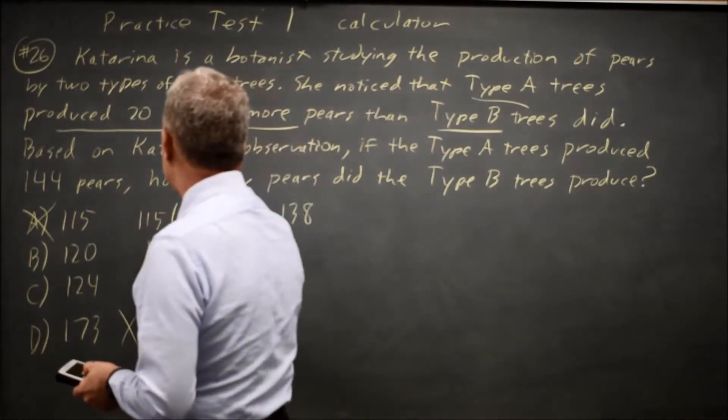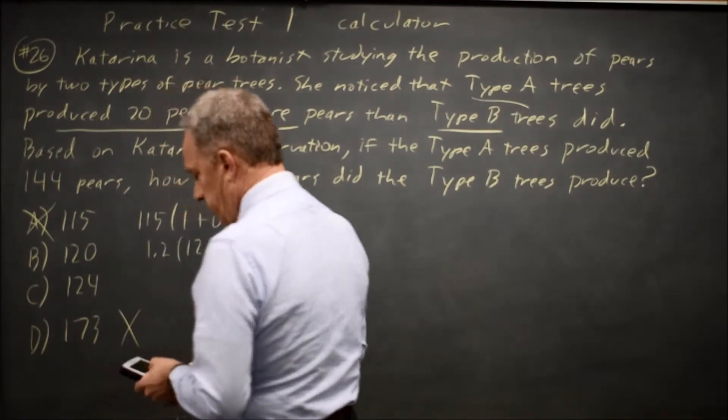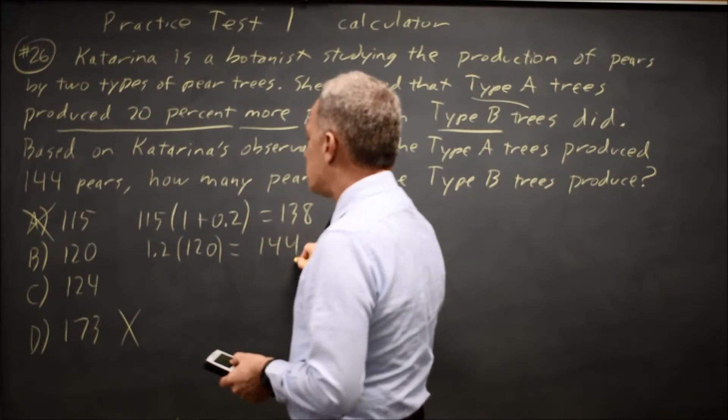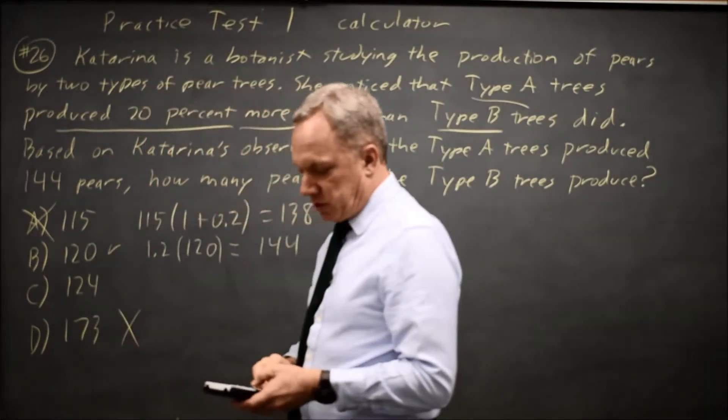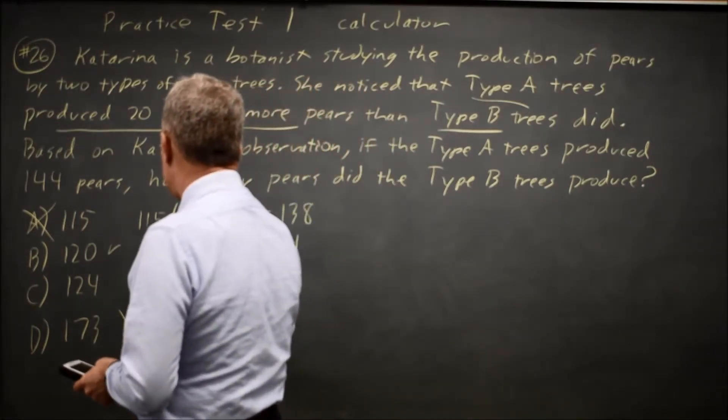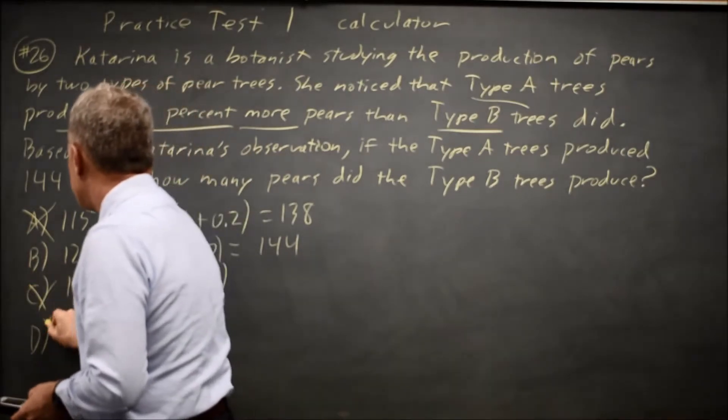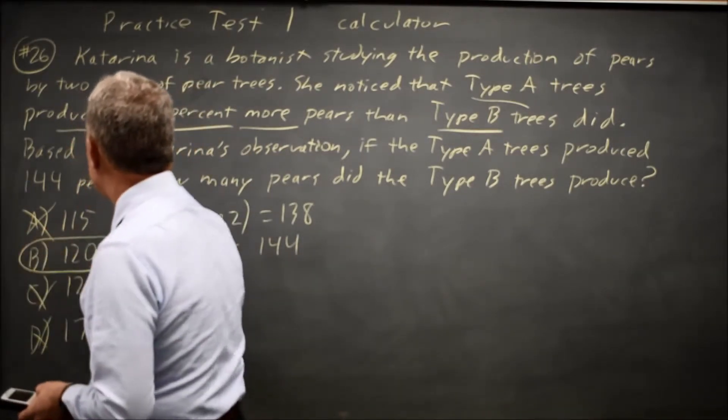1.2 times 120 gives me 144, so that is the correct answer, and 1.2 times 124 gives me 148.8, which is not 144, so choice B is the correct answer.